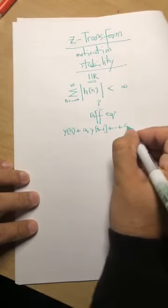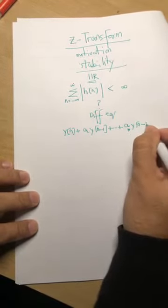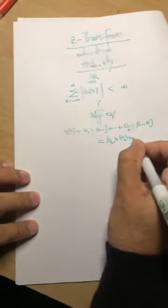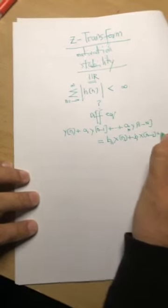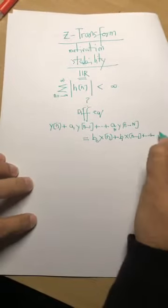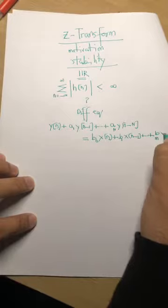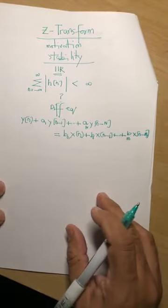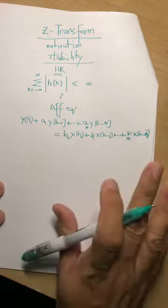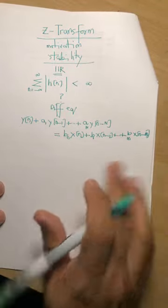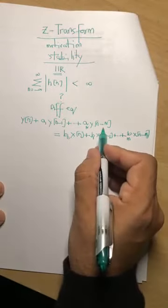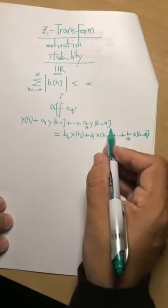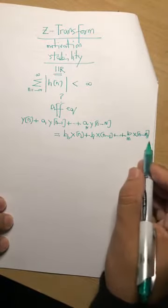The difference equation looks like: y[n] + a1*y[n-1] + ... + aN*y[n-N] = b0*x[n] + b1*x[n-1] + ... + bM*x[n-M]. When designing an IIR system, we care about the coefficients of the output terms y and the input terms x — we don't need to find the impulse response explicitly.